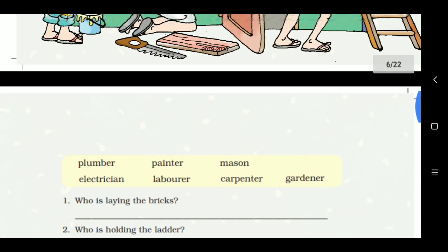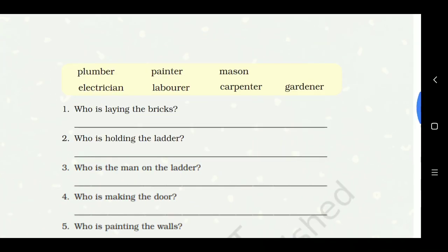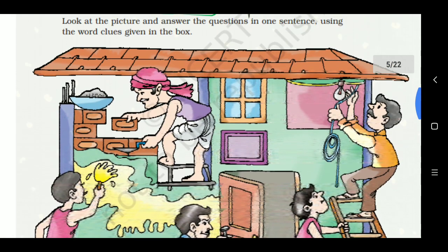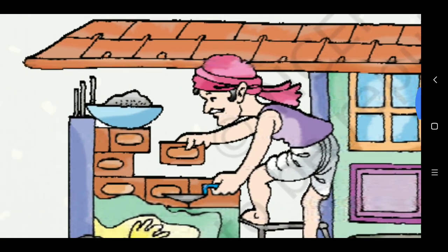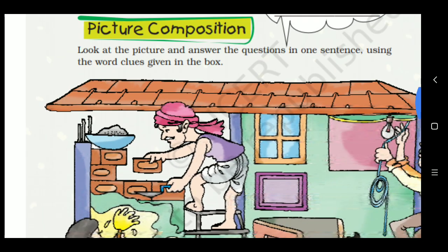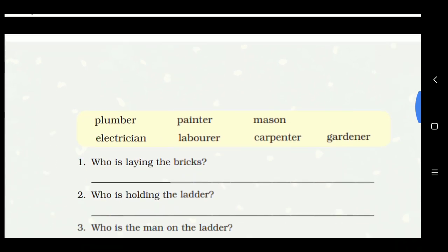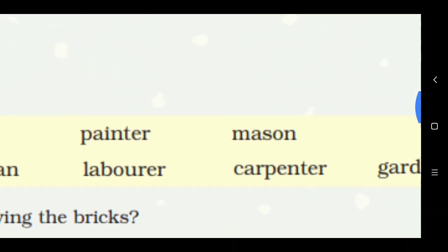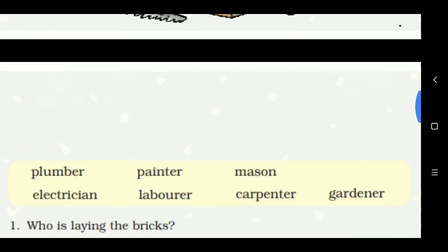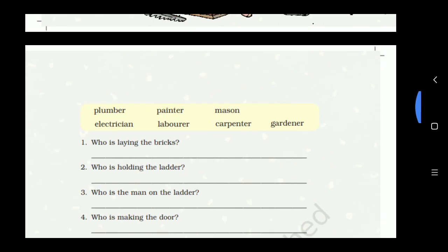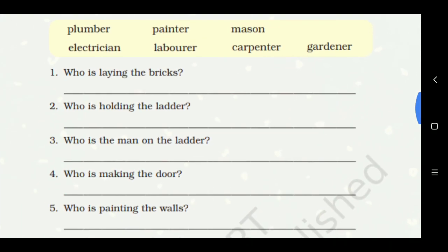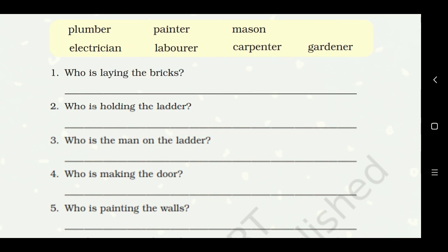Now this is the yellow box in which some clues are given. First question is who is laying the bricks? This person is laying the bricks and what is this person called? This person is called a mason, M-A-S-O-N. Who is laying the bricks? The mason is laying the bricks.